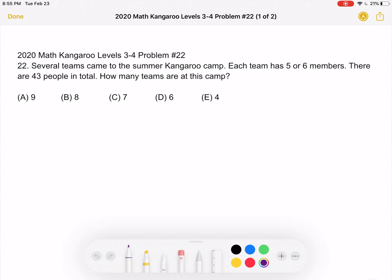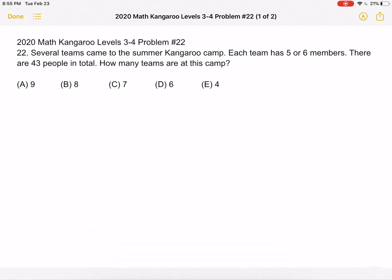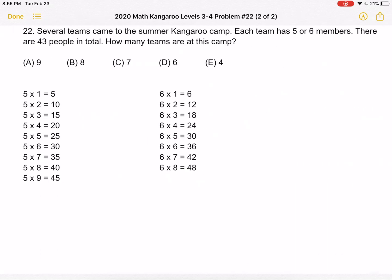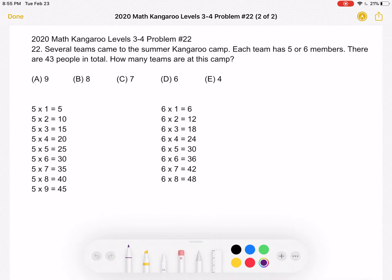A 9, B 8, C 7, D 6, or E 4. This is the problem as it originally appeared on the test, and here is where we'll be doing the solution.